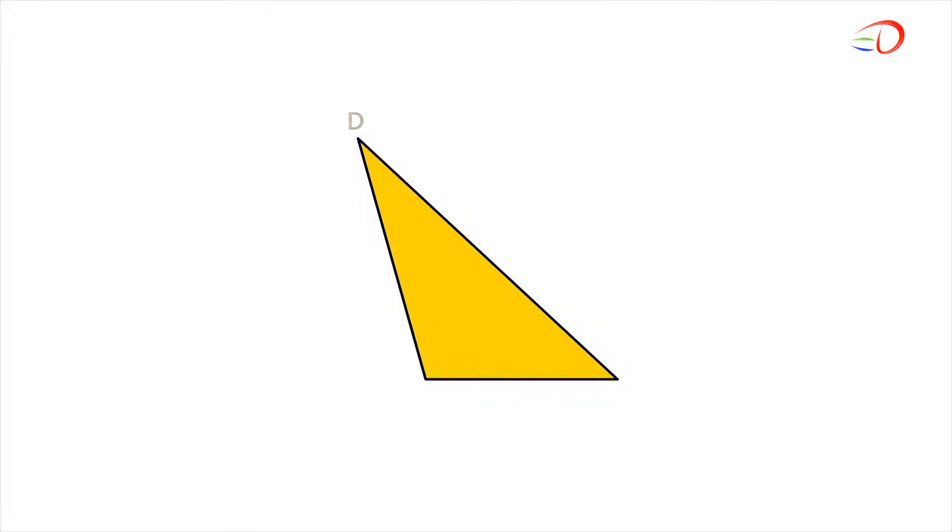Let's look at triangle DEF. Take EF as the base. Where is the vertex opposite the base? D.